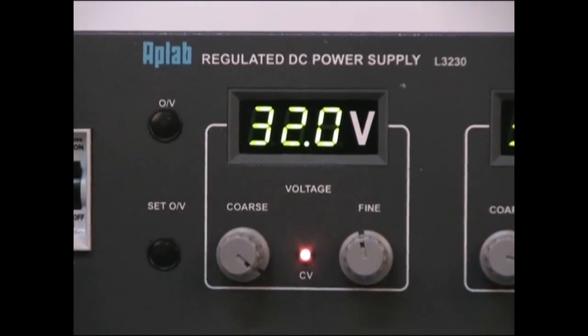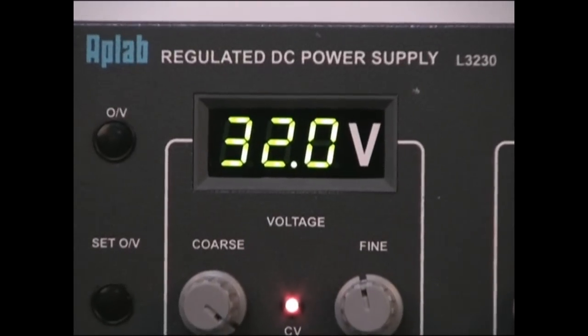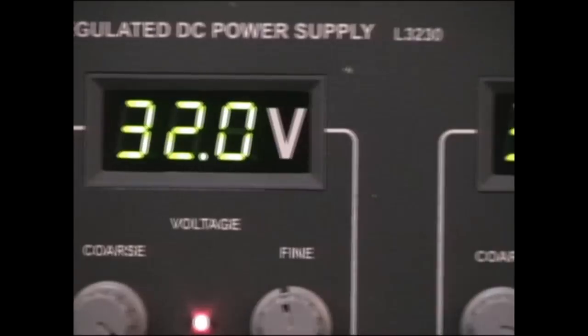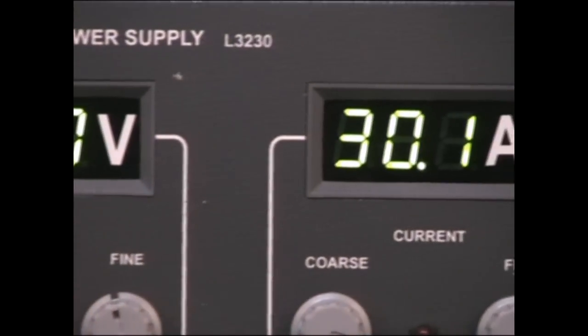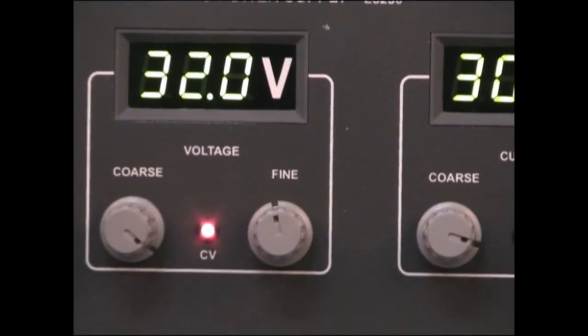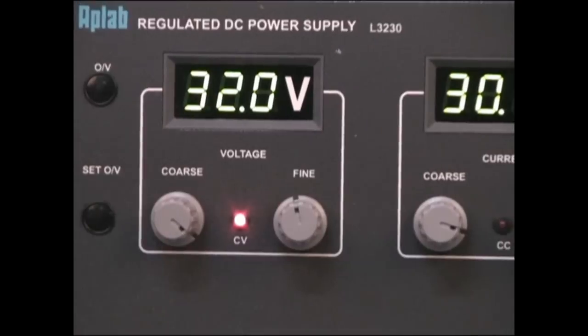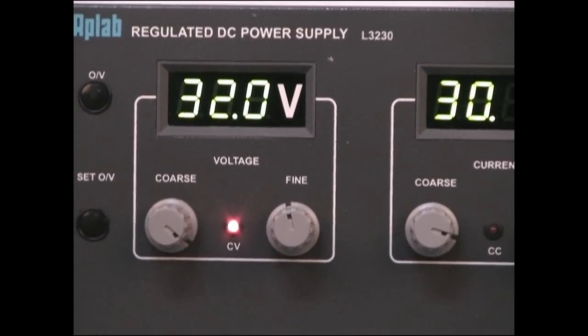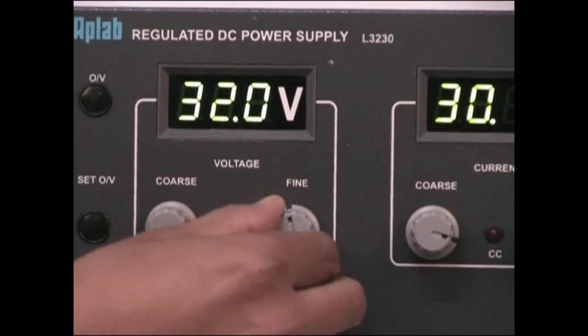3-digit panel meters provided on the front panel are used to indicate output voltage and output current. The potentiometers provided on the front panel are used to set the desired output voltage and current.